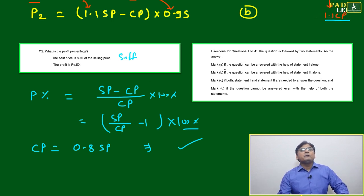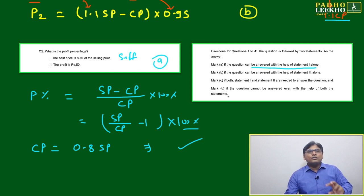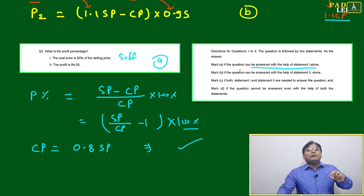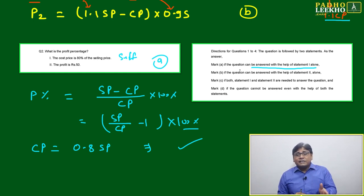We can mark A because A is telling the question can be answered with the help of statement one. No need to check further, because if you're able to answer the question based on either statement alone, many data sufficiency questions will have that option.